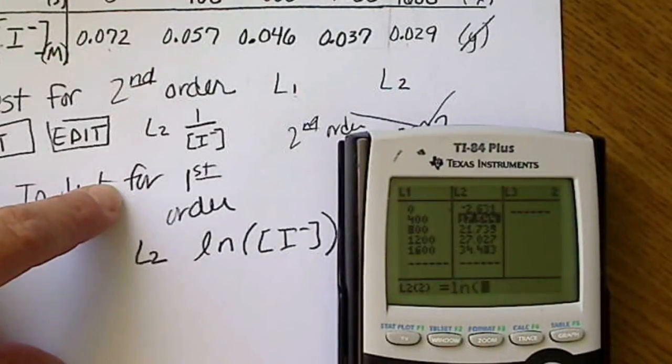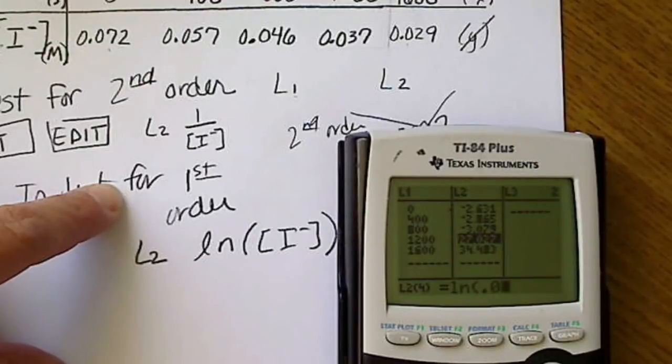The natural log of 0.057, and 0.046. The natural log of 0.037. And finally, the natural log of 0.029.